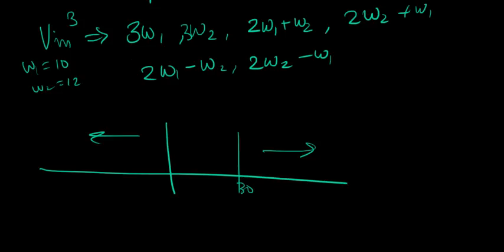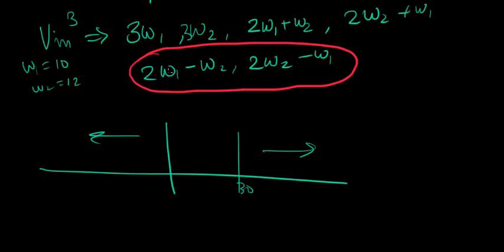Let me put them in red. Just think where this will occur. Let me first draw where our main signals are: 10 and 12. And these will happen where? 20 minus 12, which is 8, so you'll have one at 8. You'll have a little one at 8 here. And here, 24 minus 10, which is 14. And you have something here.